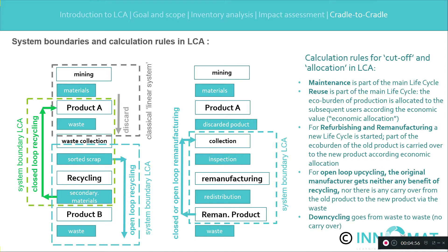Specific calculation rules are as follows: Maintenance is part of the main lifecycle. Reuse is also part of the main lifecycle, and the eco-burden of production is allocated to subsequent users according to economic value — so-called economic allocation. For refurbishing and remanufacturing, a new lifecycle is started, and part of the eco-burden of the old product is carried over to the new product according to economic allocation. For open-loop upcycling, the original manufacturer gets neither any benefit of recycling, nor is there any carryover from the old product to the new product. This is the so-called cut-off at the stockpile of waste, and the new product starts with eco-cost zero. Downcycling goes from waste to waste — no carryover, which means cut-off at the waste stockpile.